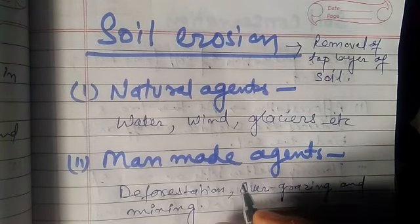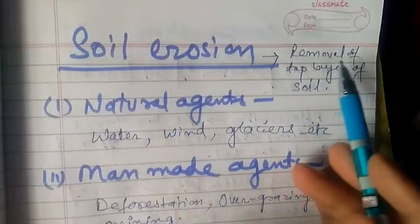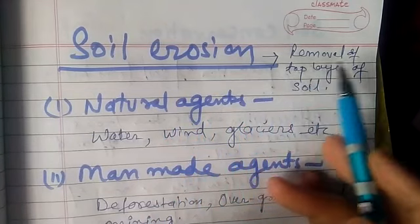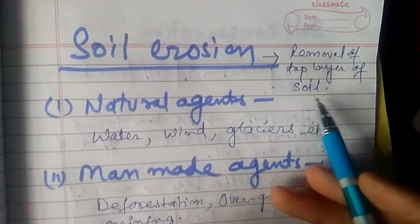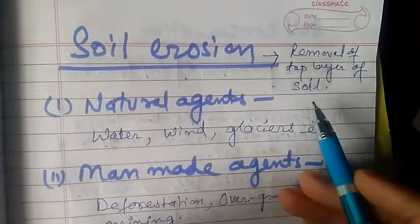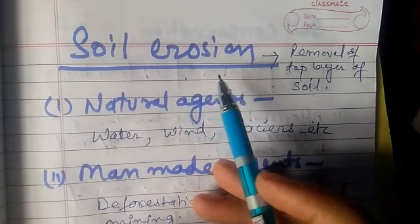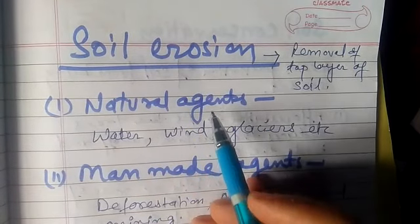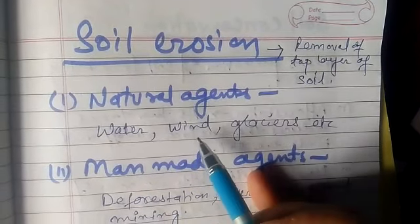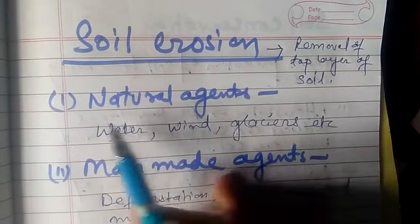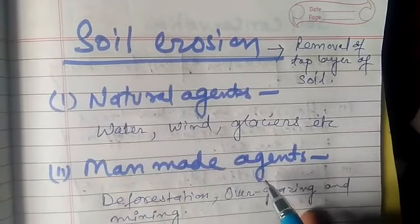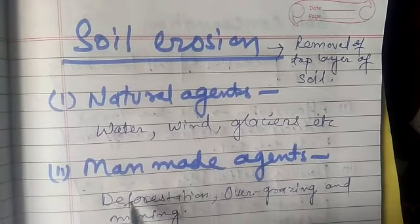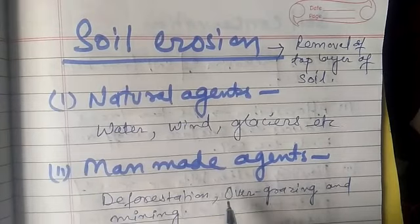What is the meaning of soil erosion? Soil erosion means the removal of the top layer of soil. Now, what are the causes of soil erosion? There are two agents which contribute to soil erosion — the natural causes and the manmade causes.